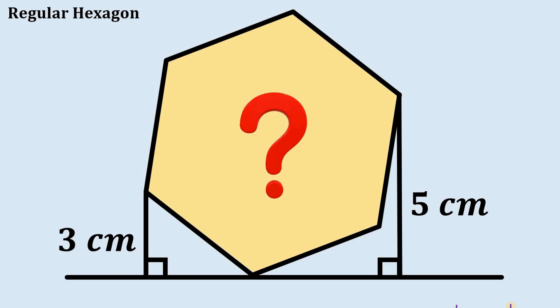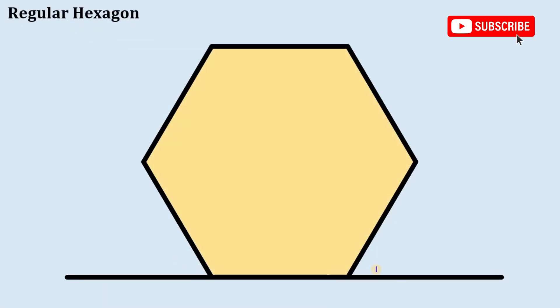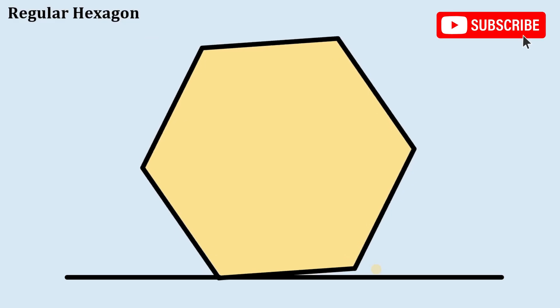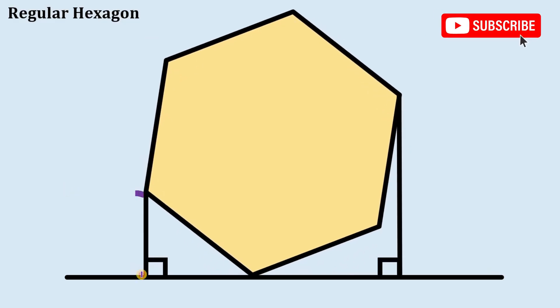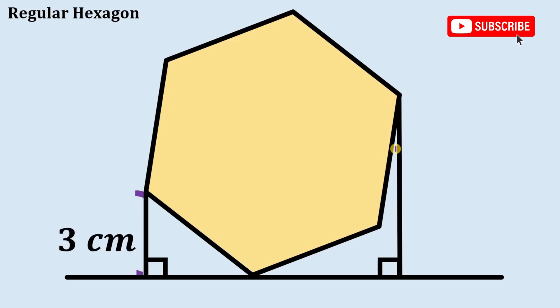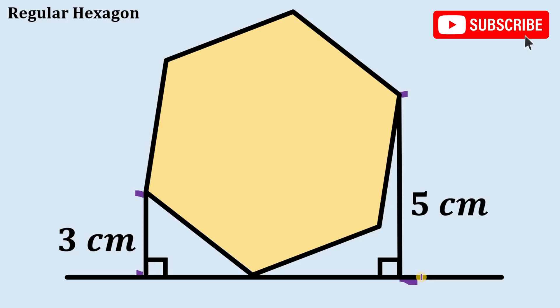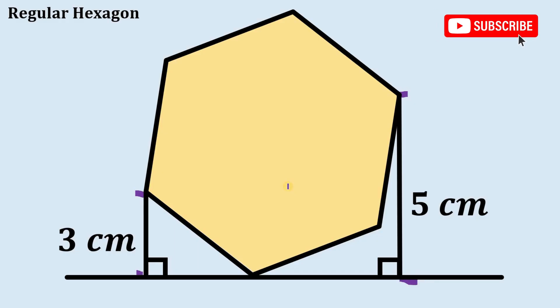Can you solve this geometry challenge? Here's the question: given a regular hexagon, we're going to tilt it a little bit. The measure of this segment is three centimeters and this segment measures five centimeters.